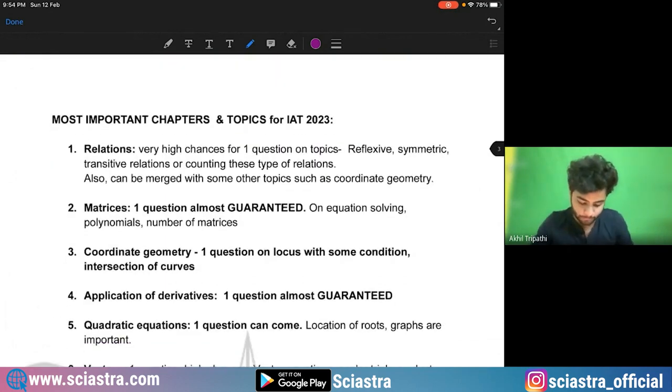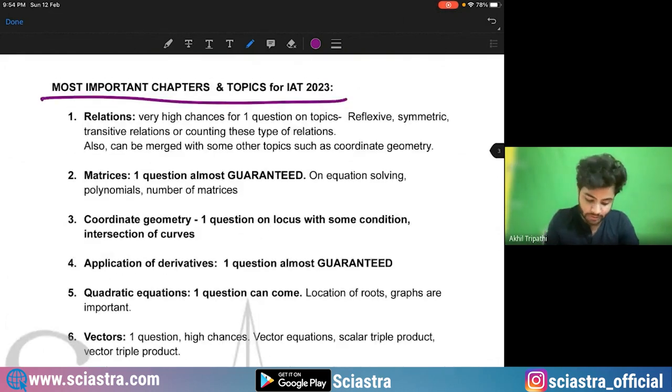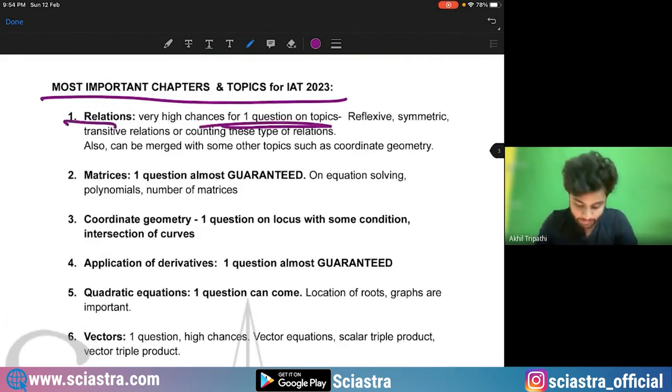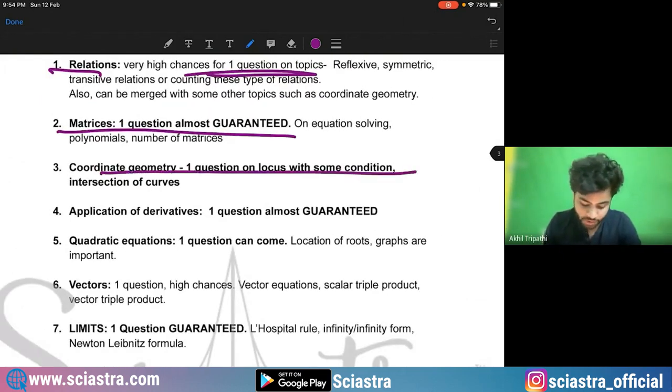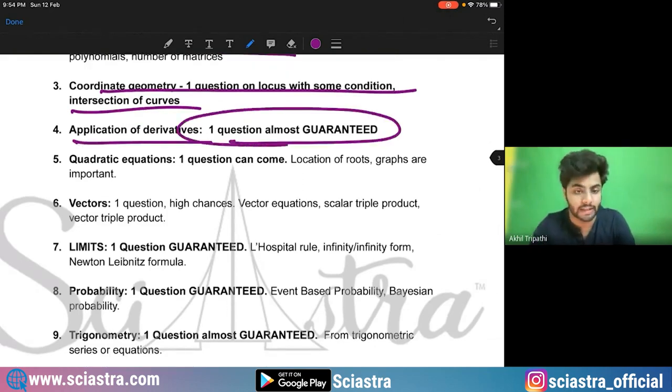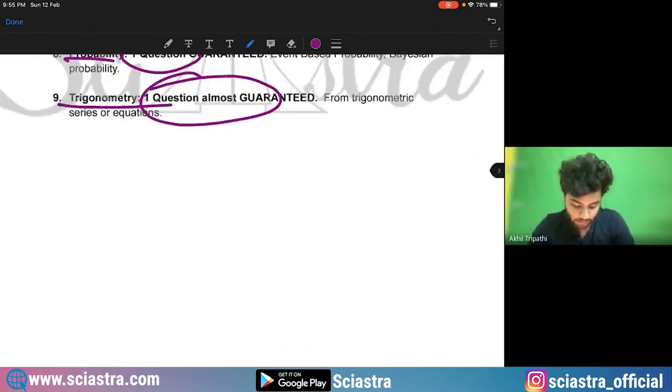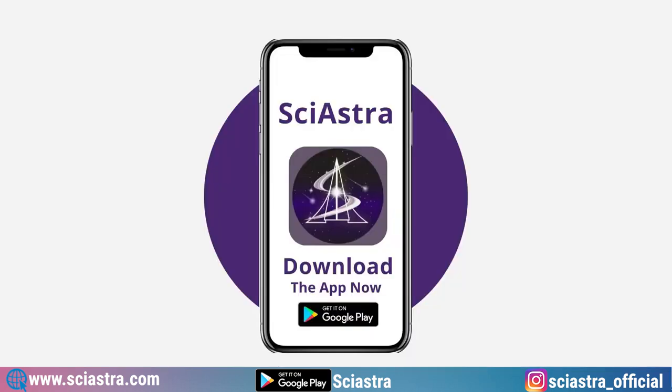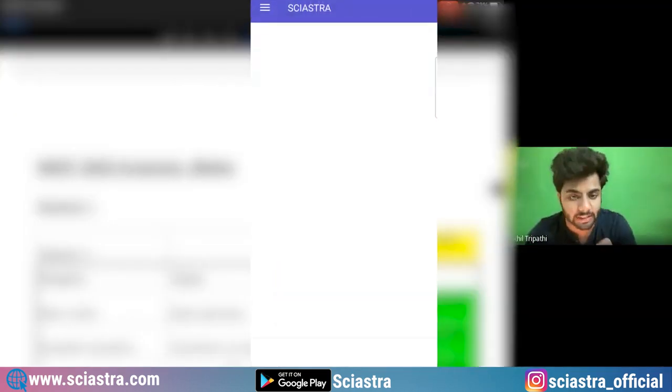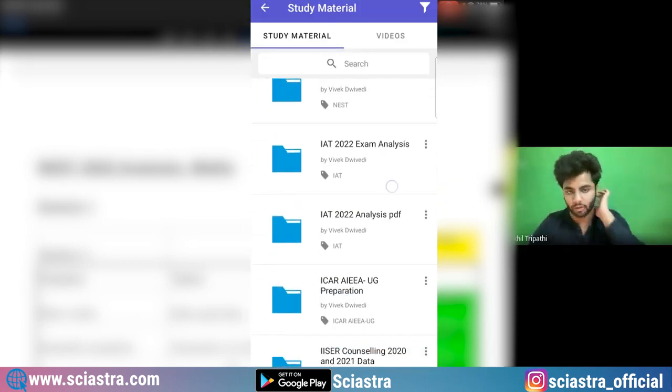Coming to most important topics and chapters, there is a detailed discussion. You see here relations, one question is almost guaranteed. Matrices, one question guaranteed. Coordinate geometry, one question from the locus and intersection of the curve. Application of derivatives, one question almost guaranteed. Vectors again one question. Limits one question. Probability one question. Trigonometry one question. All of this PDF you will get for free in our Sciastra app. Just go to the Sciastra app and you will go to free study material section and you will get all of these important topics and chapters.